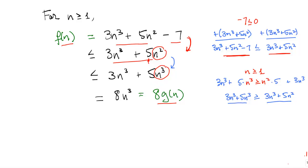Now the rest is just algebra. Combining the 3n³ and the 5n³ terms gives 8n³, which equals 8 times g(n).